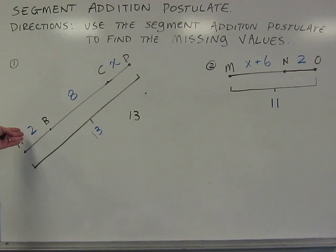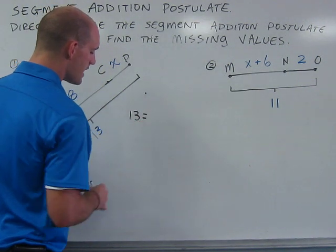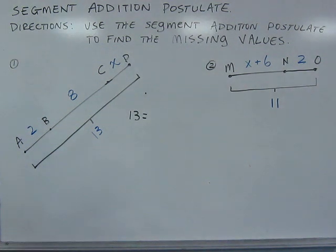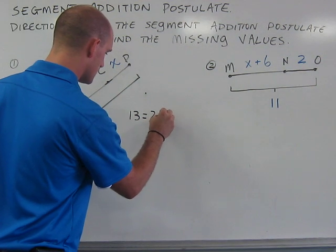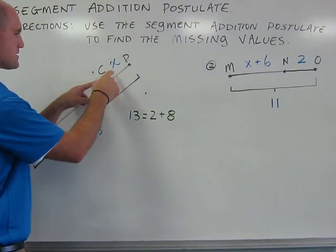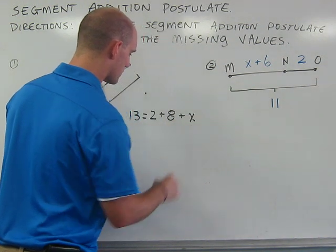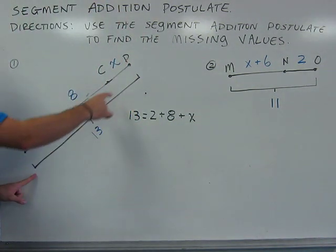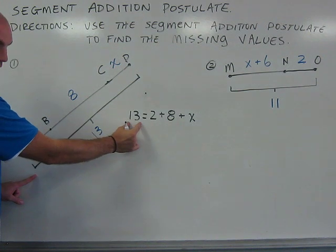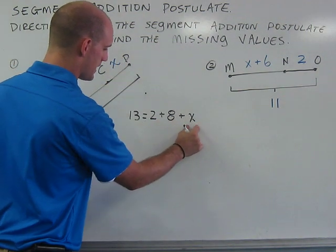So, what I can do now is take 13 and set it equal to each of the individual parts added together. So, I'll add together 2 plus 8 plus X. The entire length of the segment, or 13, is equal to the sum of each individual piece.